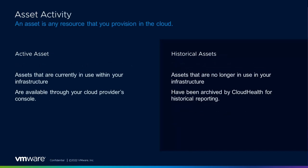There are also active and historical assets. Active assets are currently in use in your infrastructure; historical assets are no longer in use but still exist because we keep up to 13 months of data. An instance that existed for one hour 12 months ago will still appear. When thinking about tagging strategy, keep in mind it's hard to go back and adjust those short-lived assets, so some unallocated assets are expected and acceptable.